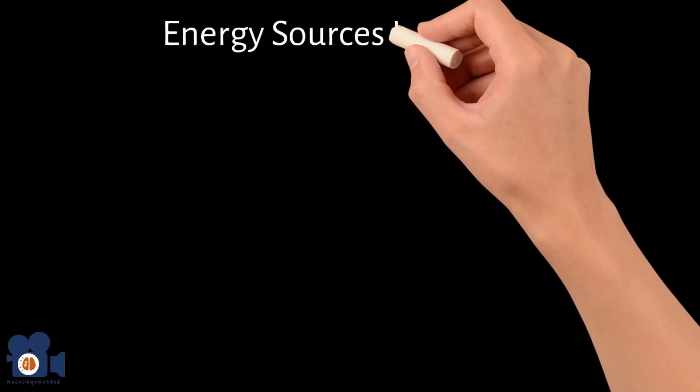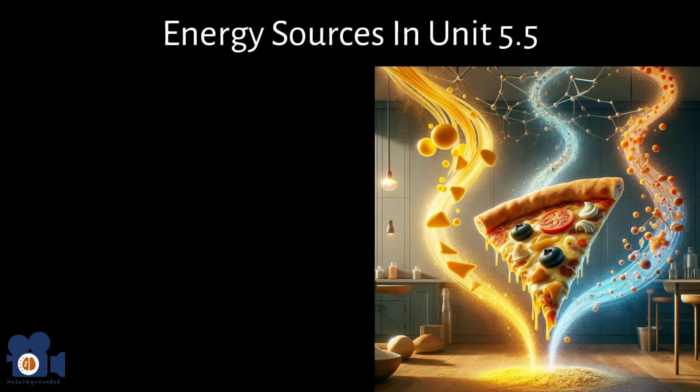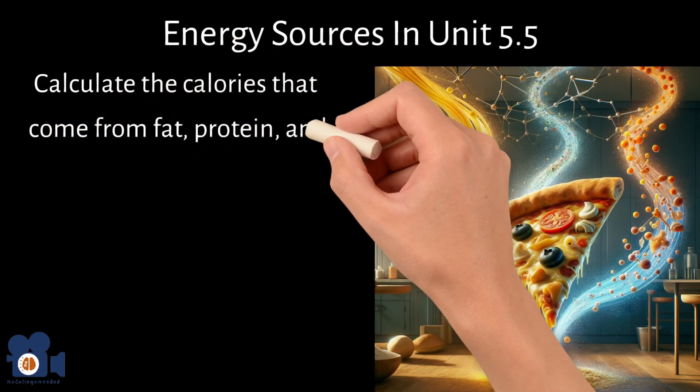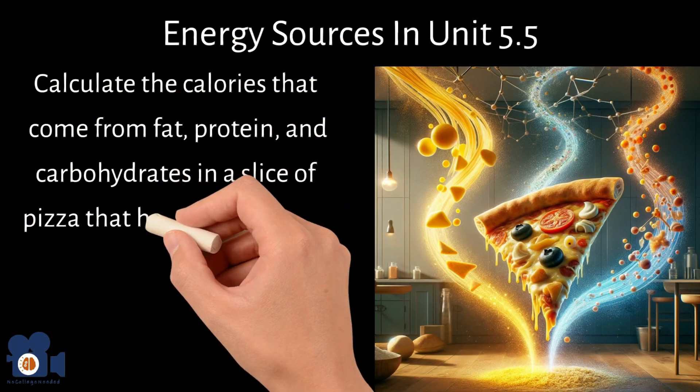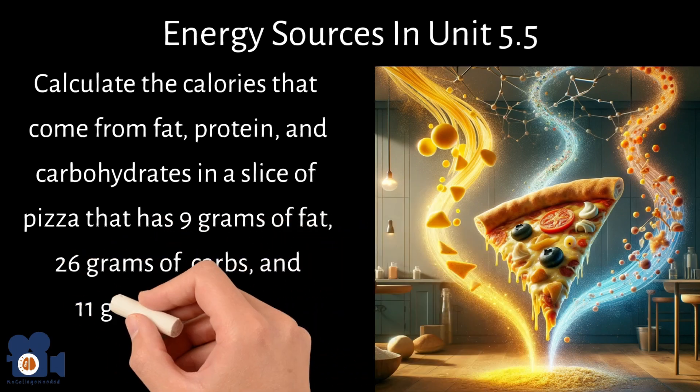With energy sources in unit 5.5, calculate the calories that come from fat, protein, and carbohydrates in a slice of pizza that has 9 grams of fat, 26 grams of carbohydrates, and 11 grams of protein.